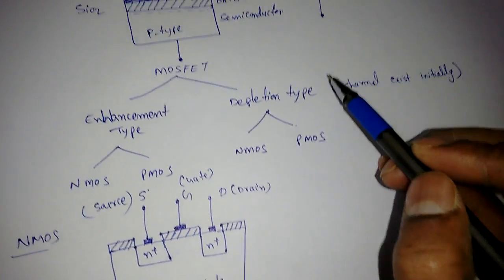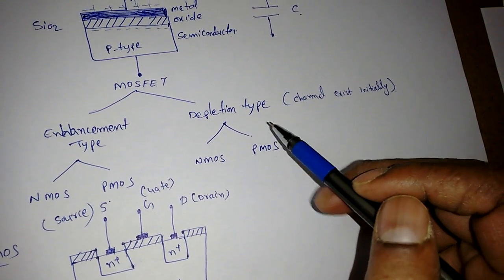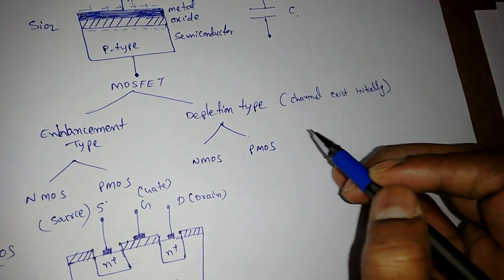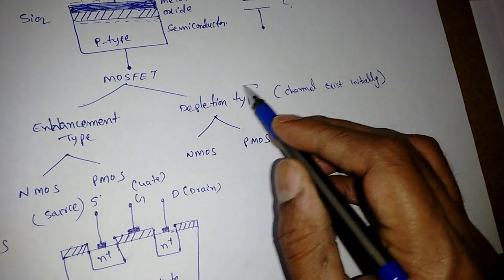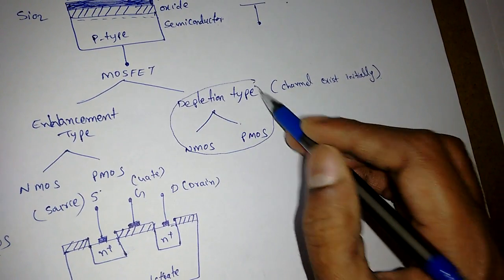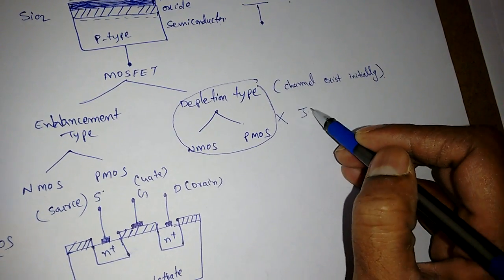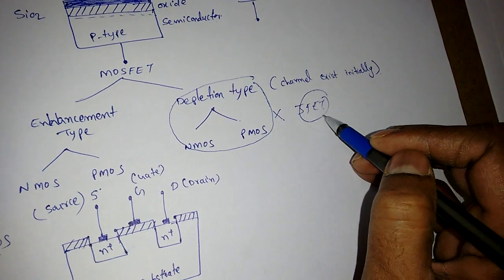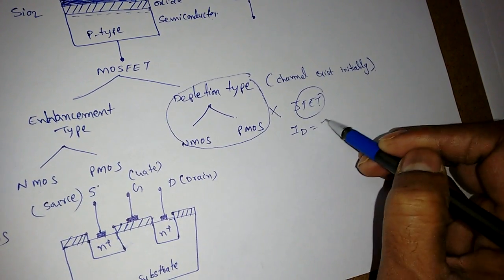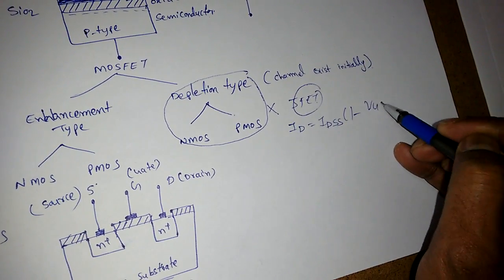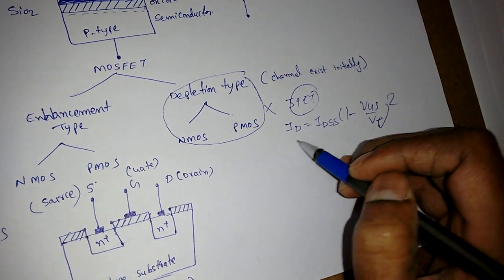In the depletion type, the channel exists initially. When you apply voltage, the channel is gradually removed until the current becomes zero. We generally don't use depletion type MOSFETs nowadays. The depletion type MOSFET operates similarly to a JFET (junction field effect transistor), whose current equation is: I_D = I_DSS × (1 − V_GS / V_P)², where V_P is the pinch-off voltage and V_GS is the applied gate voltage.